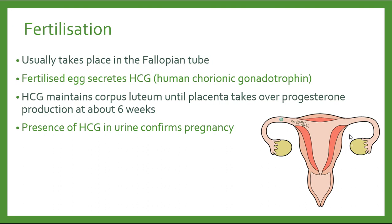Fertilization would normally take place within the fallopian tube, within the oviduct, and then from there the fertilized egg travels through the rest of the oviduct to implant in the uterus. At this point, the fertilized egg will begin to secrete another hormone, HCG. This hormone is only ever secreted during pregnancy, and that is the basis for pregnancy tests. The role of HCG is to maintain the corpus luteum — that empty follicle within the ovary — so that it continues to produce the hormone progesterone in order to maintain the pregnancy and the lining of the uterus within the first six weeks. After the six-week period, the placenta should be fully developed and will begin to take over the role of producing progesterone.